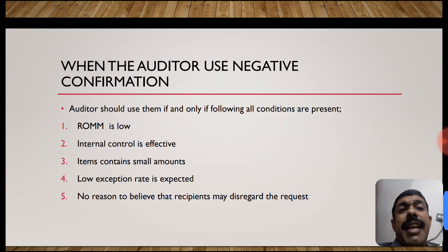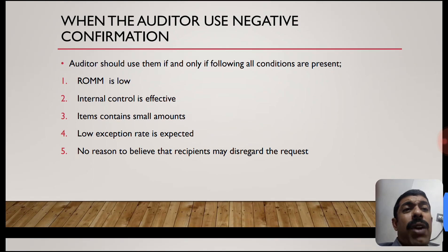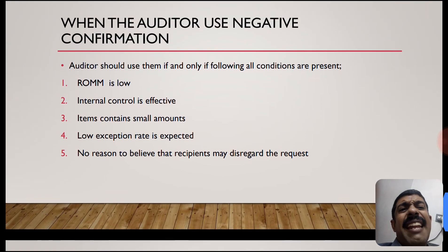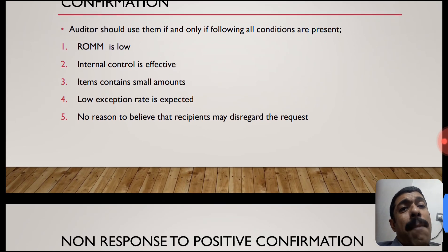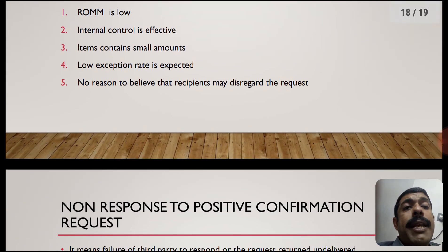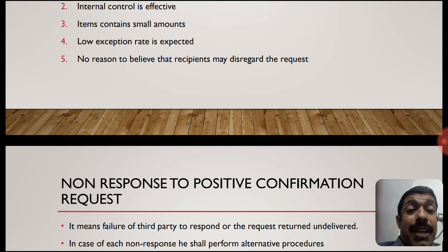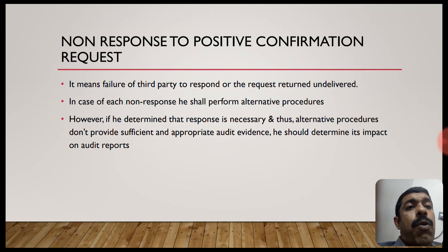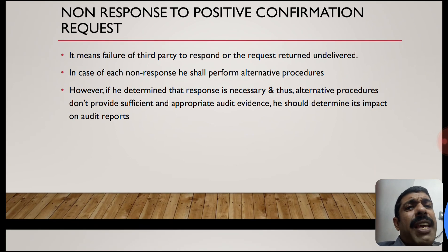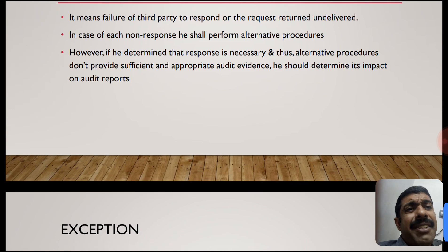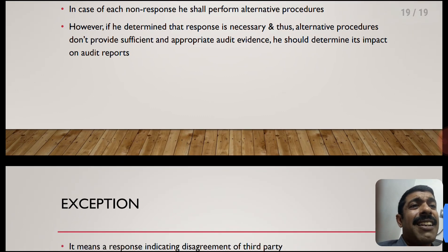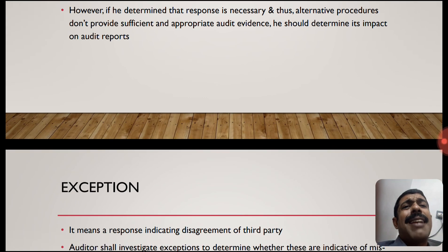When should an auditor use negative confirmation? The auditor should use negative confirmation only if all of the following conditions are present: the risk of material misstatement (ROMM) is low, internal control is very effective, items contain small amounts, a low exception rate is expected, and there is no reason to believe that the recipient may disregard the request. Non-response to a positive confirmation request means the failure of a third party to respond or a request returned undelivered. In each case of non-response, the auditor shall perform alternative audit procedures.